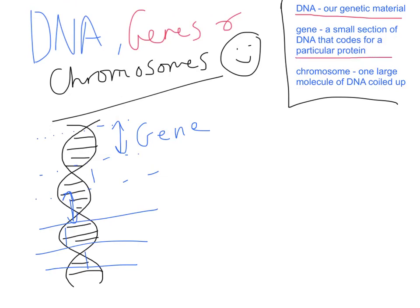What genes actually do are code for proteins. They have the instructions to make all the proteins that the body requires. So DNA is our genetic material, and genes are sections of that genetic material.